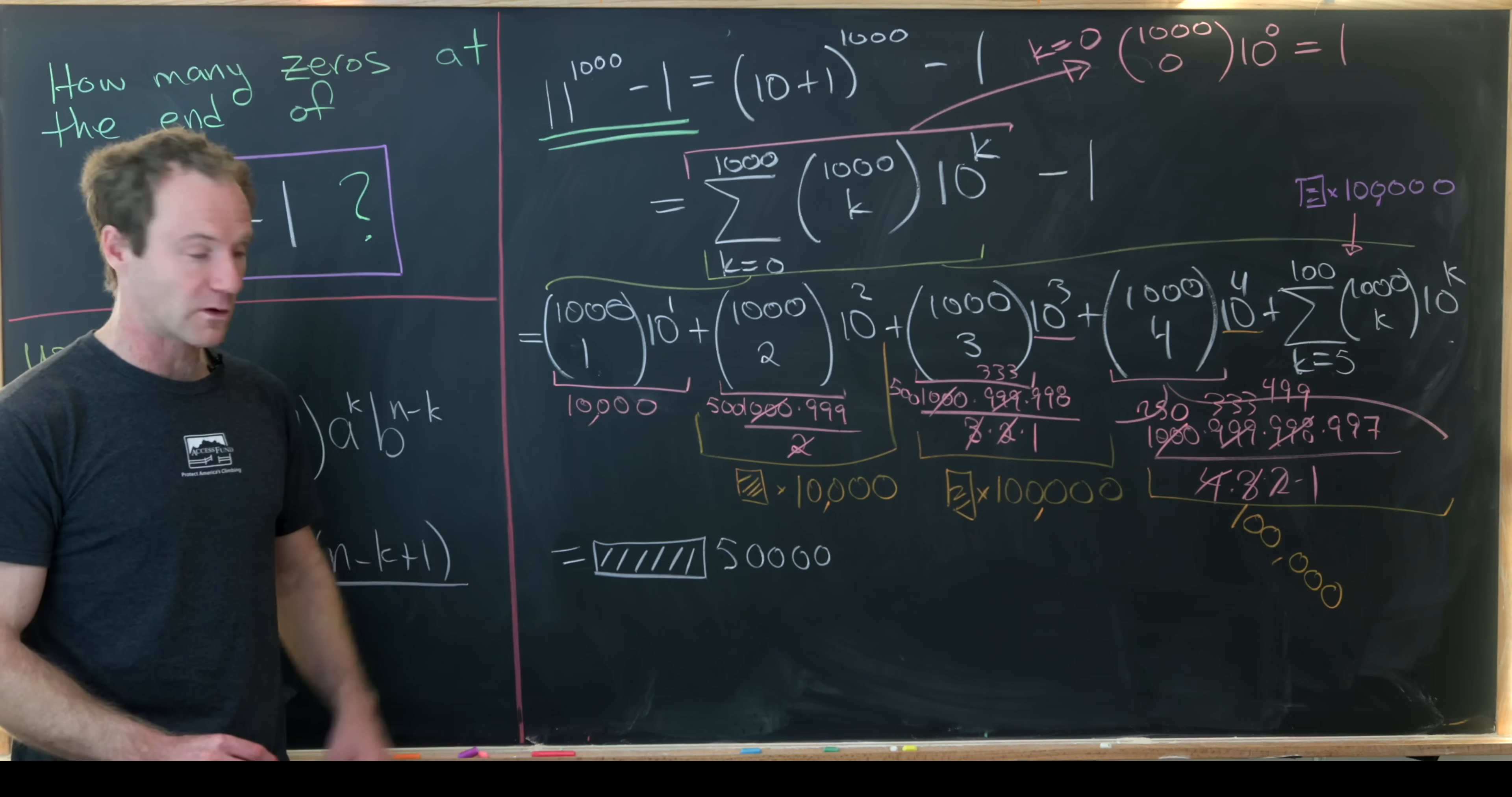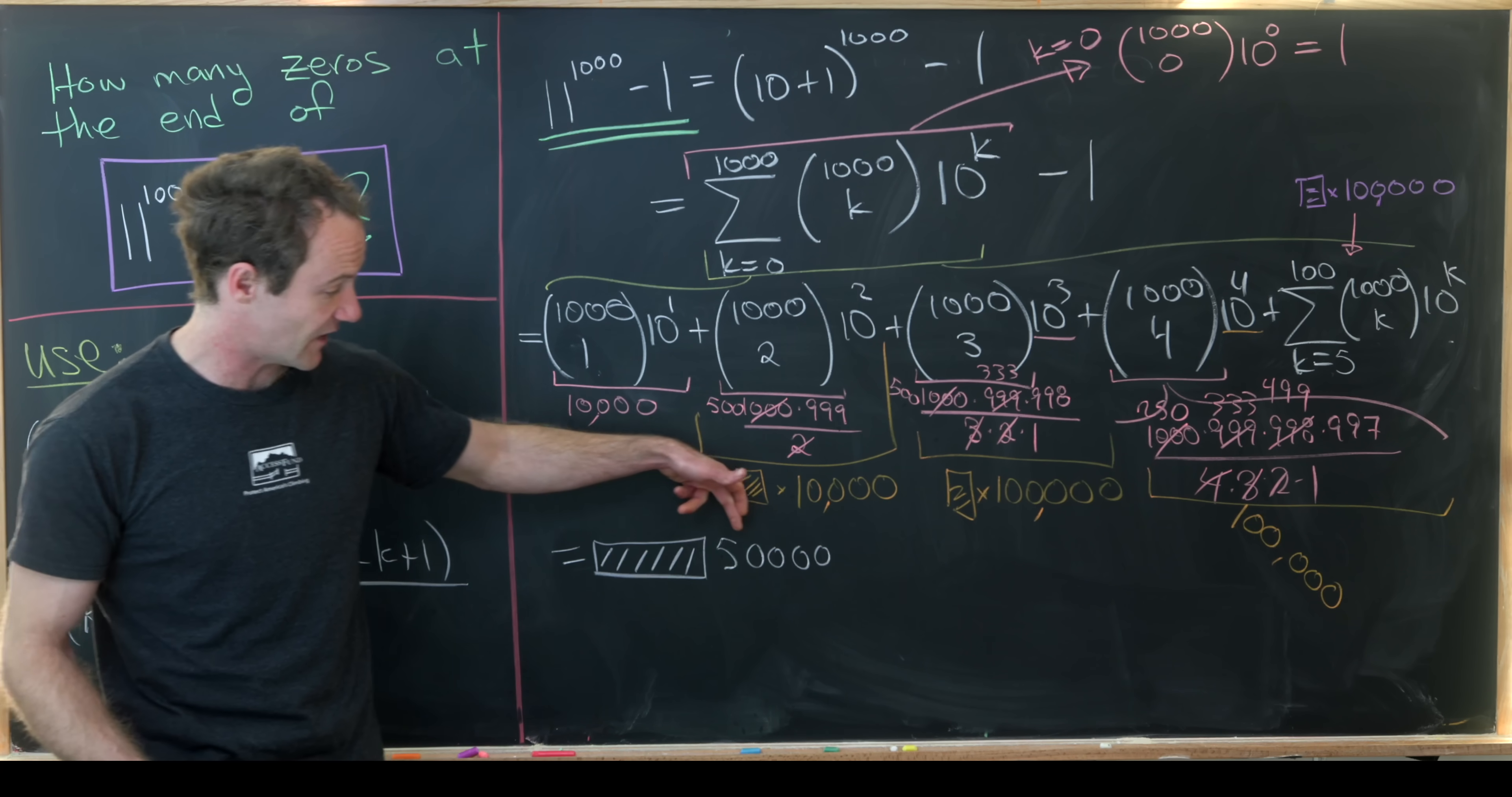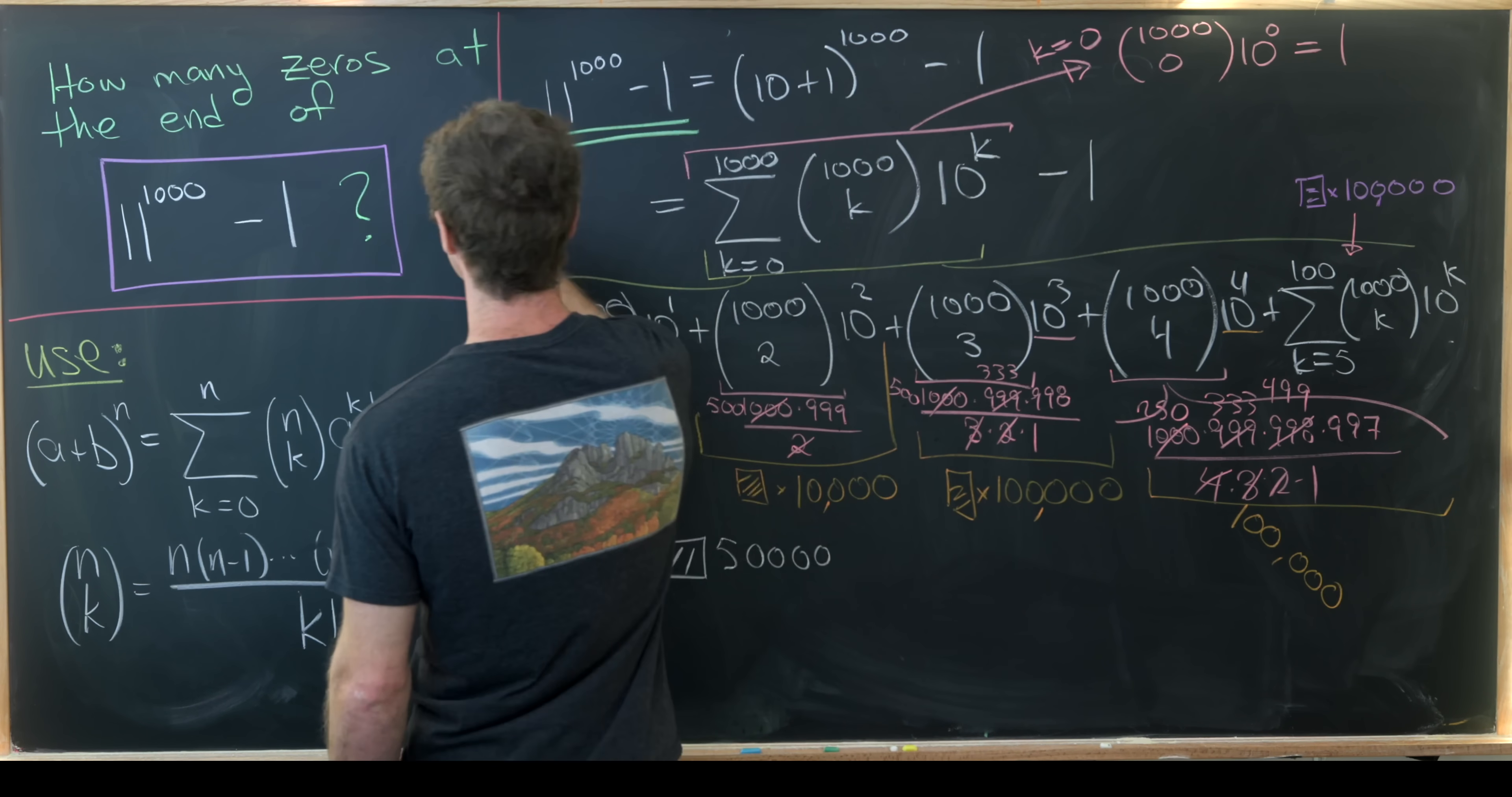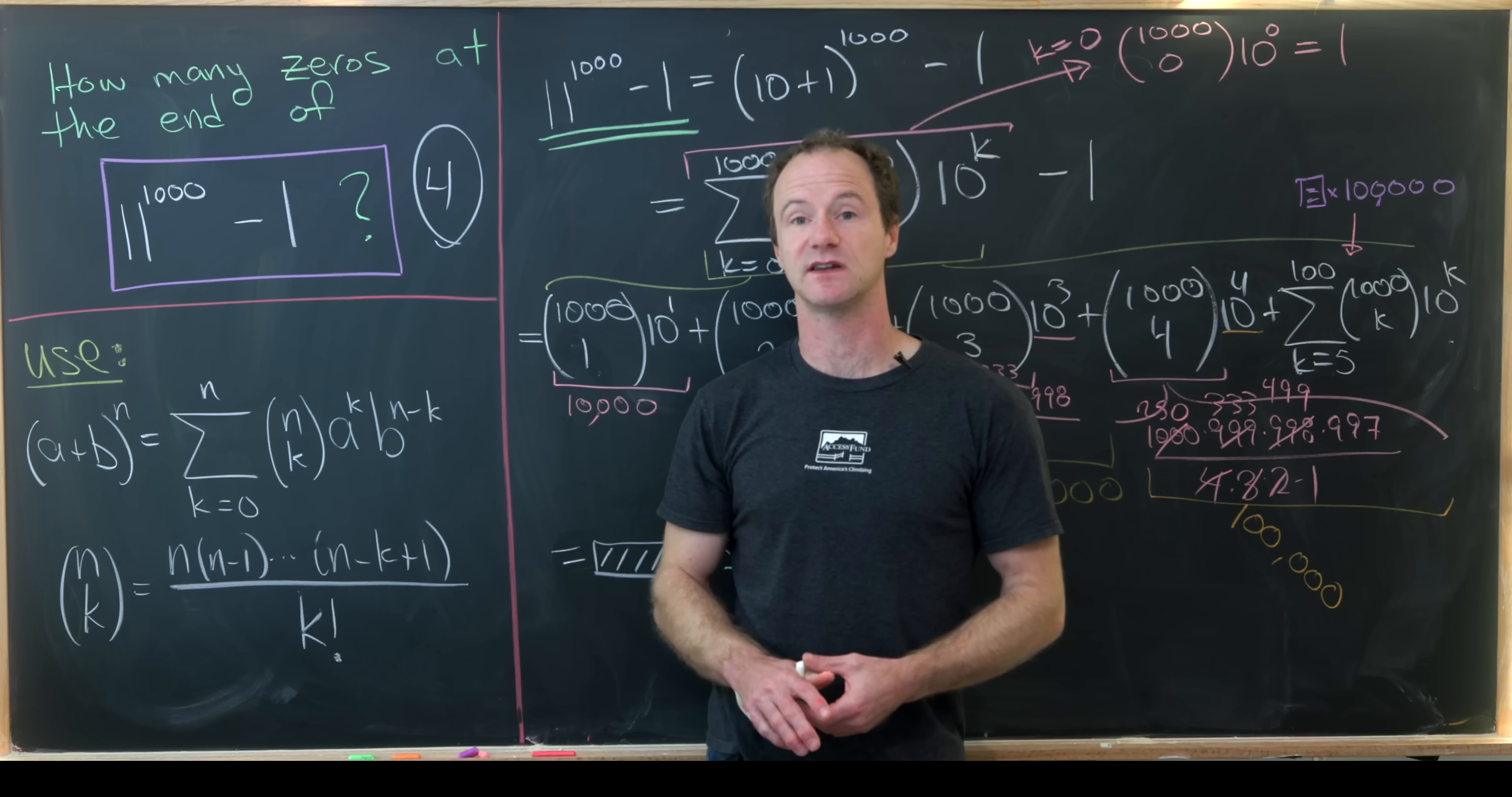So the final format of this number is a bunch of unknown digits, a five and then four zeros. But that gives us our answer. So how many zeros are at the end of this number? There are exactly four zeros. And that's a good place to stop.